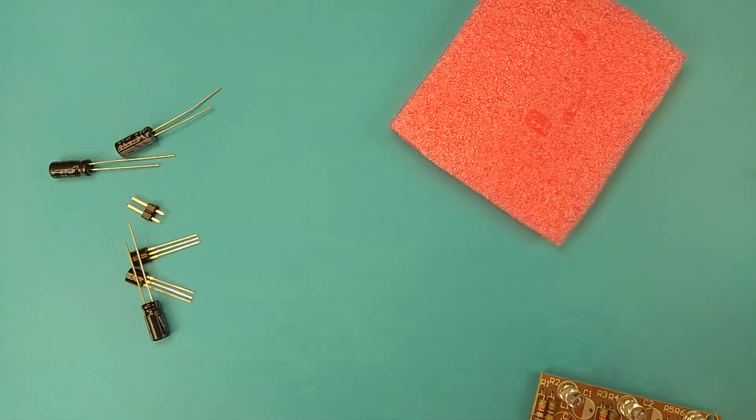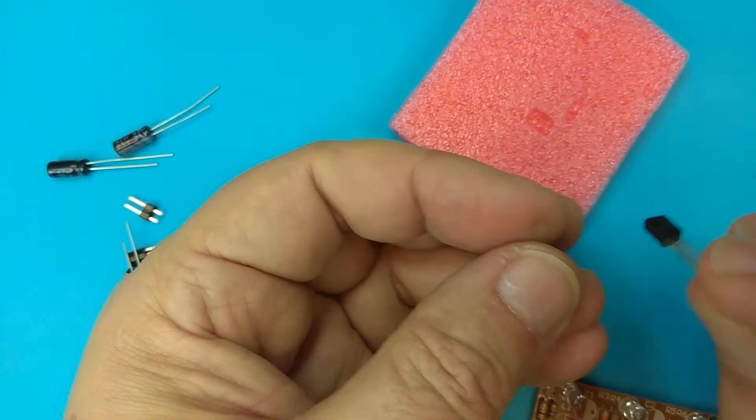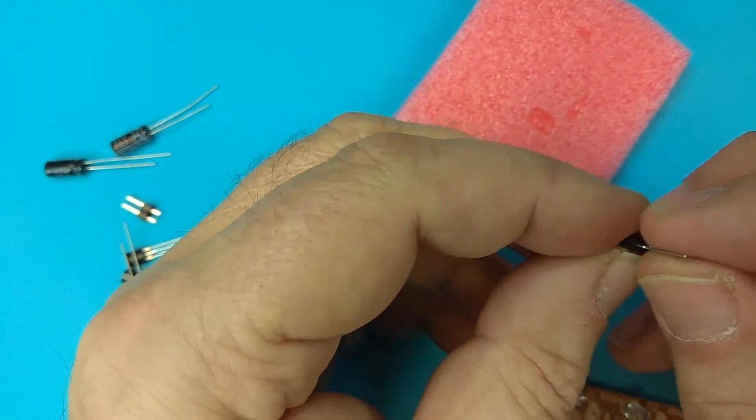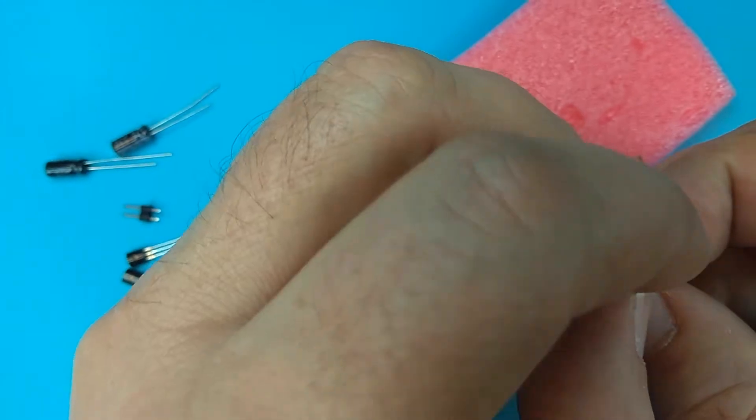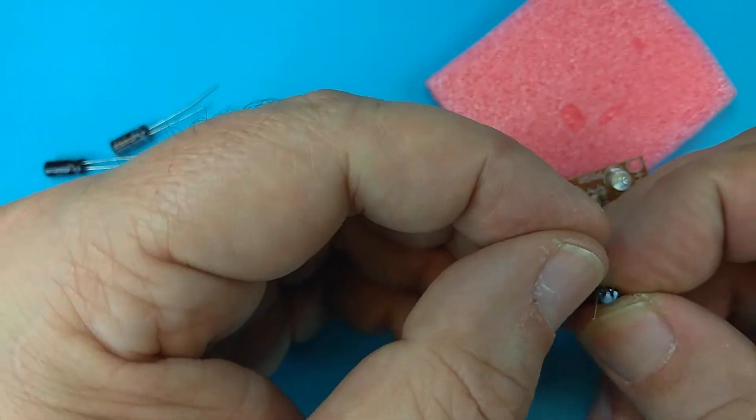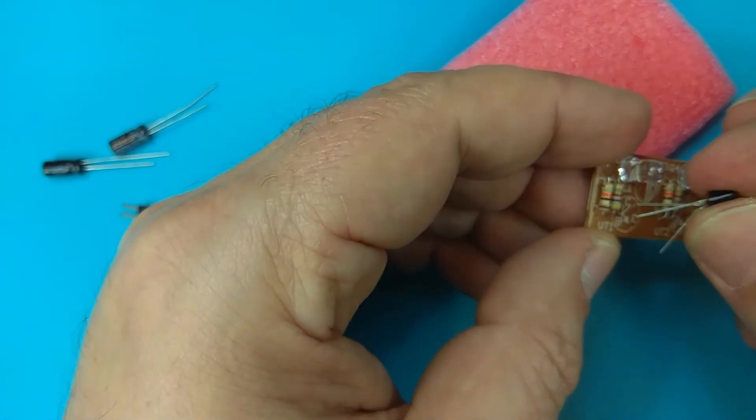So, if you hold the transistor in this way, the flat is upside. Alright, then the first is the emitter, the next is collector and this is the base. Emitter, collector and base.